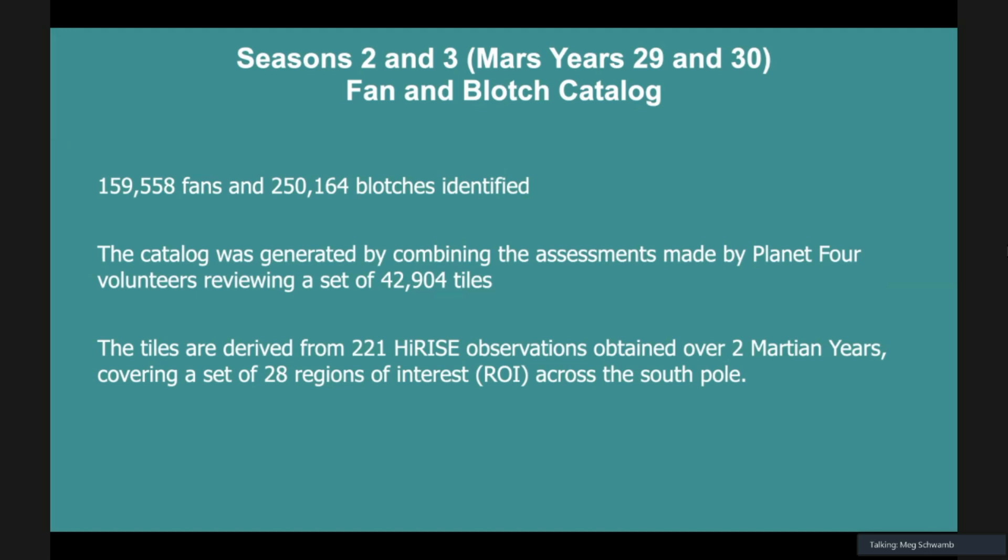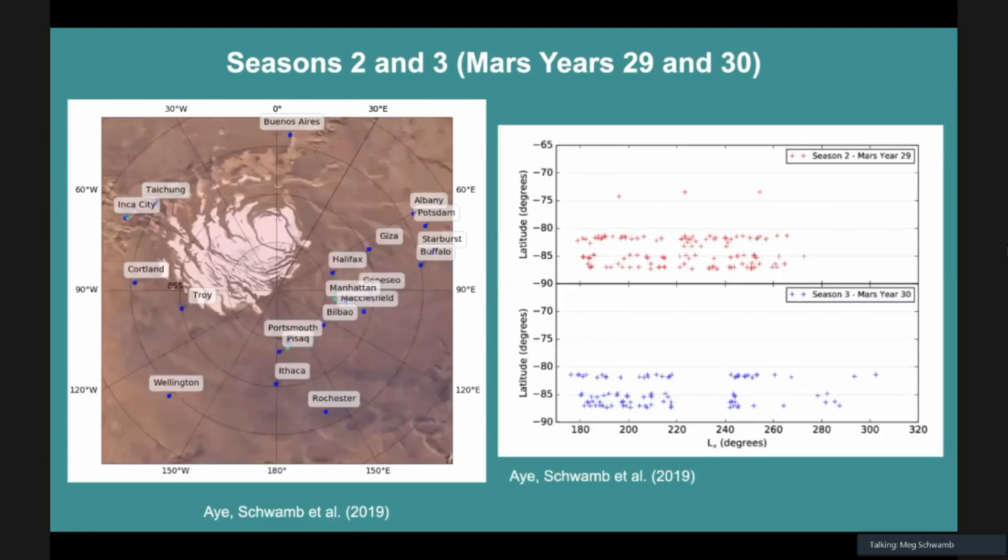The tiles are coming from about 221 HiRISE images that we looked at over two Martian years, covering about 28 regions from the South Pole. This is the power of this, is that we're able to get really into the meat of being able to look at different regions, because we've had the ability to process this data so quickly.